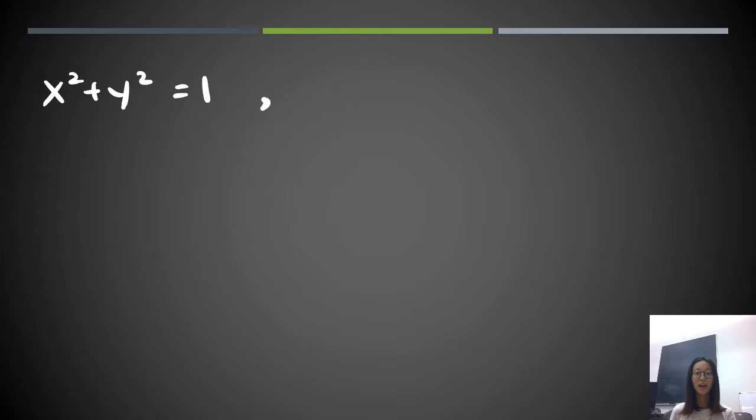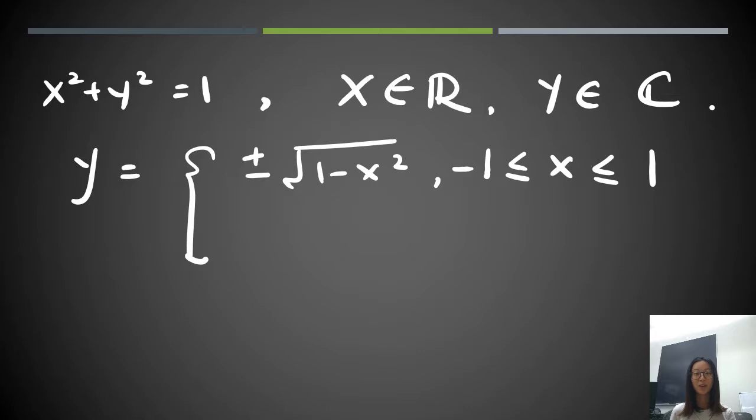For simplicity, let's look at this equation by asking x to be still a real number, whereas y to be a complex number. Let's see what's happening. By solving this very simple equation, we know that y equals ±√(1-x²) when x is within the range -1 to 1. What happens when x is outside of this range? We know that the formal solution is still the same: y is still ±√(1-x²).